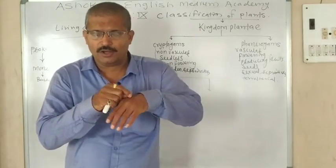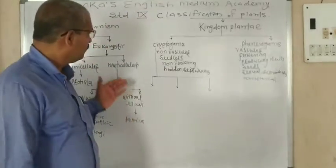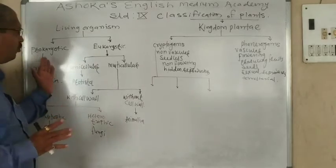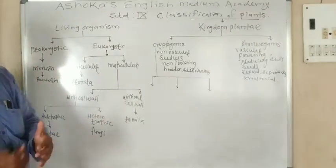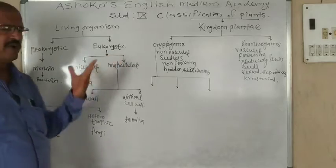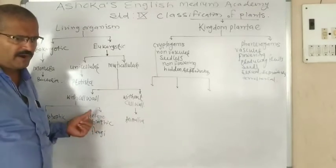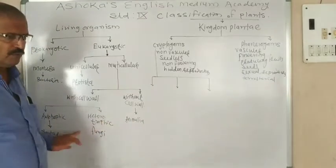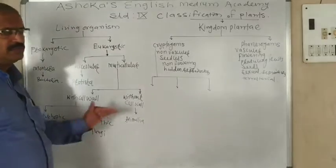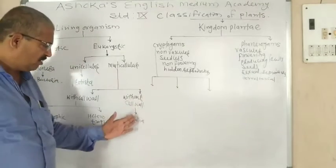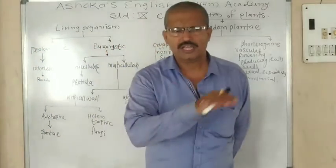The second multicellular group is without cell wall, which means Animalia. Animals do not have a cell wall; we have a cell membrane, but cell wall is absent. Thus living organisms are divided into prokaryotic and eukaryotic. Prokaryotic example is Monera — bacteria. Eukaryotic cells are unicellular and multicellular. Multicellular is divided into with cell wall — Plantae and Fungi — and without cell wall — Animalia. By this way, you have reviewed the classification of living organisms from the previous class.